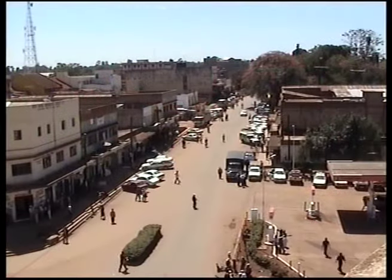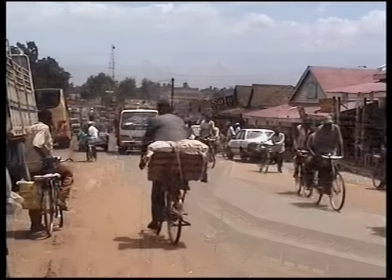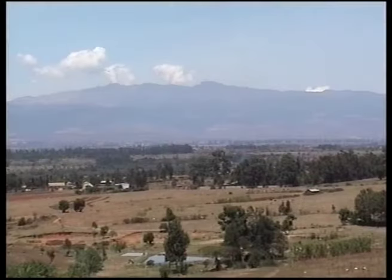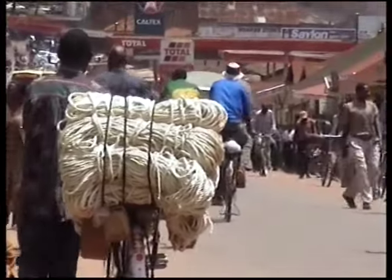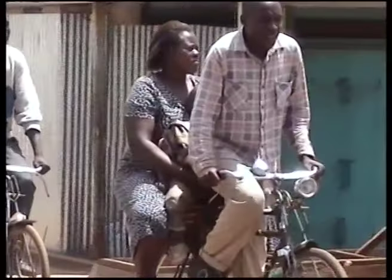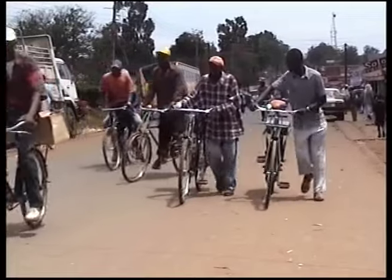Kitale municipality, an urban setting where the current Building in Partnerships participatory urban planning project is being implemented, is located in the central area of Trans-Nzoia district in the Rift Valley province of Kenya, between Mount Elgon to the West and the Cherangani Hills to the East. Kitale became a township in 1930, and in 1968 it became a full municipal council. There are 12 electoral wards in the municipality, each represented by a councillor. According to the 1999 population census, Kitale had a population of 147,992 people, representing 25.7% of the district population, with a density of 562 persons per square kilometre. The population has continued to rise within the municipality since then.